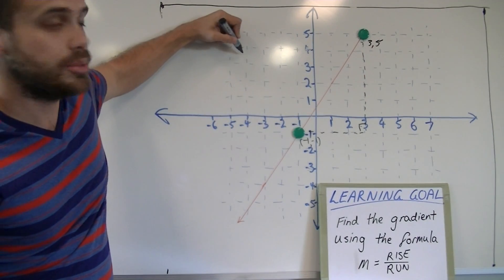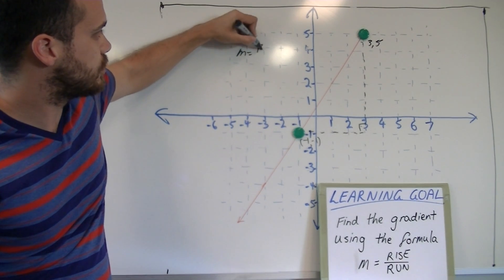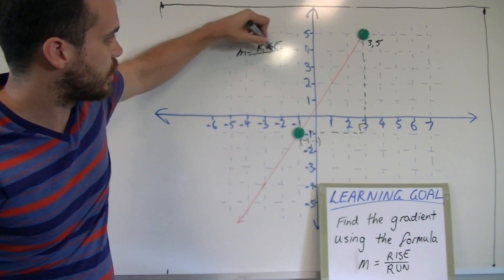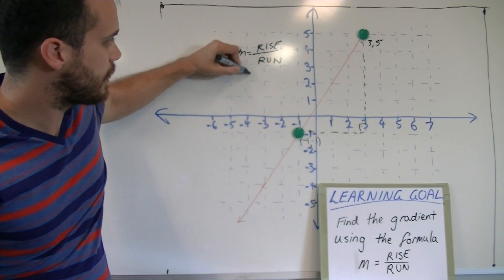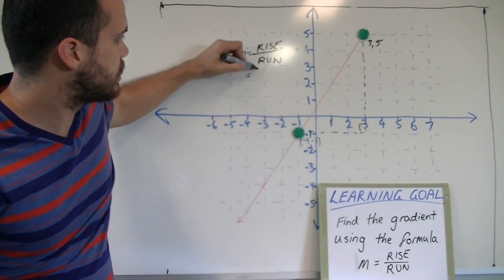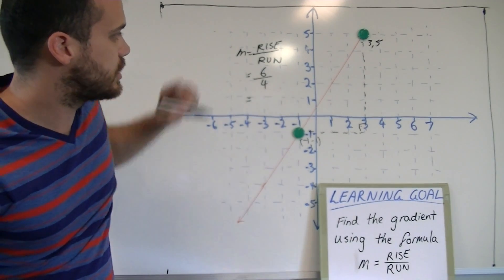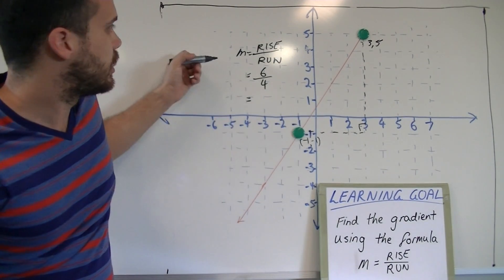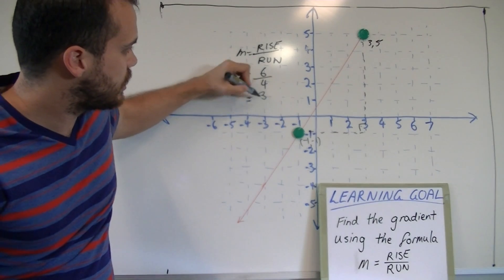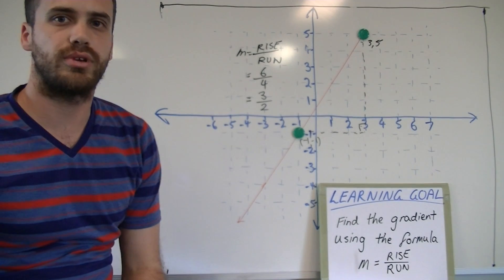So, using our formula, M equals rise over run. Our rise, you can see, is 6. Our run is 4. Now, we can simplify that. Our gradient for this particular equation is 3 over 2.